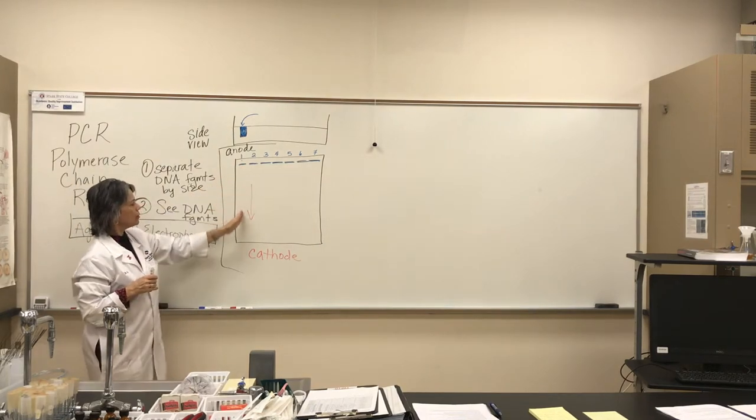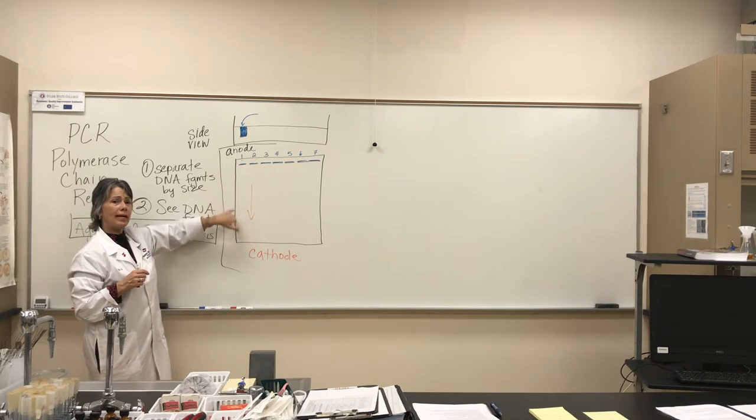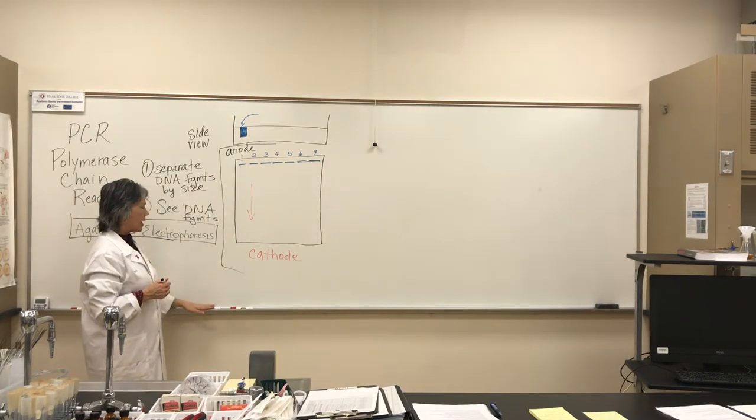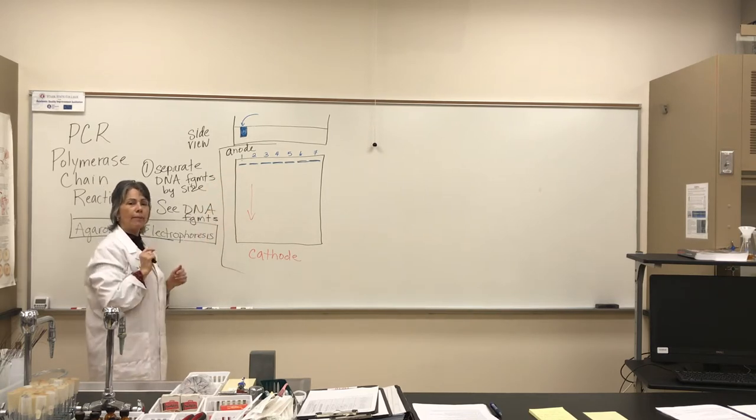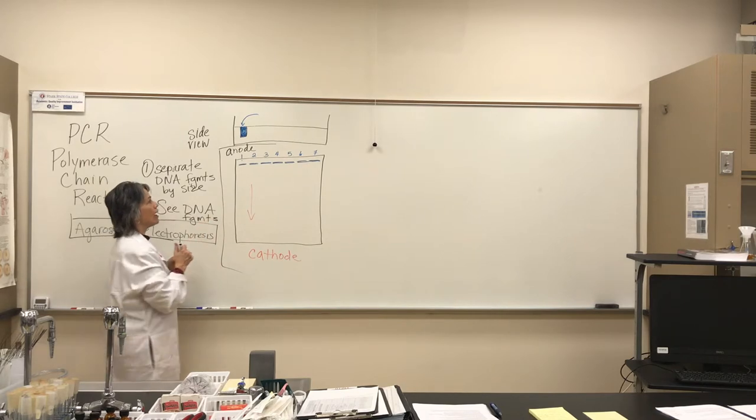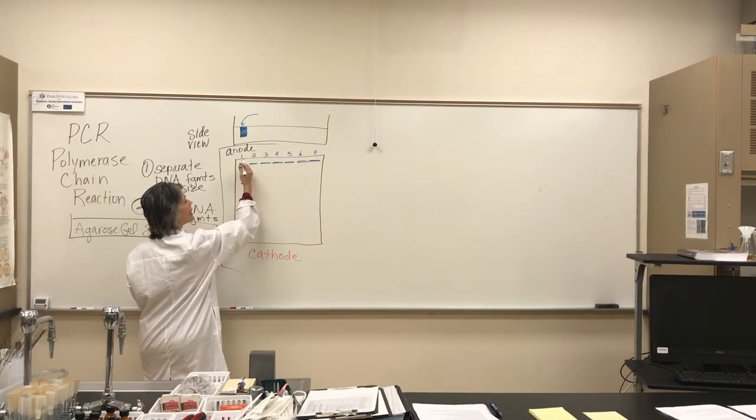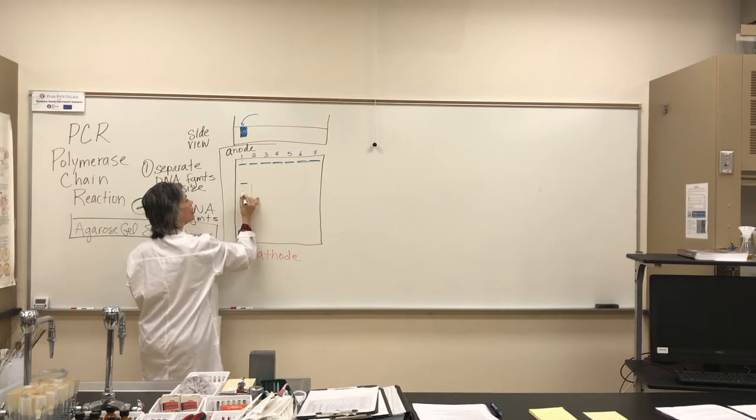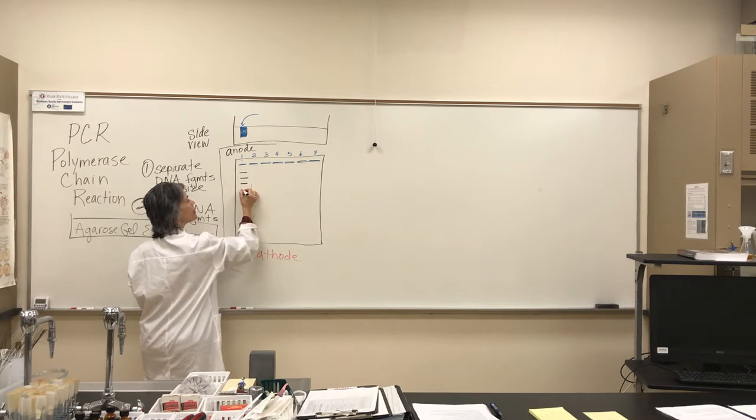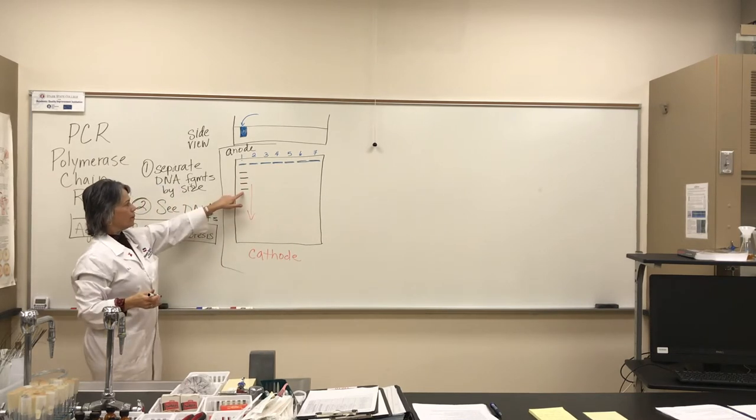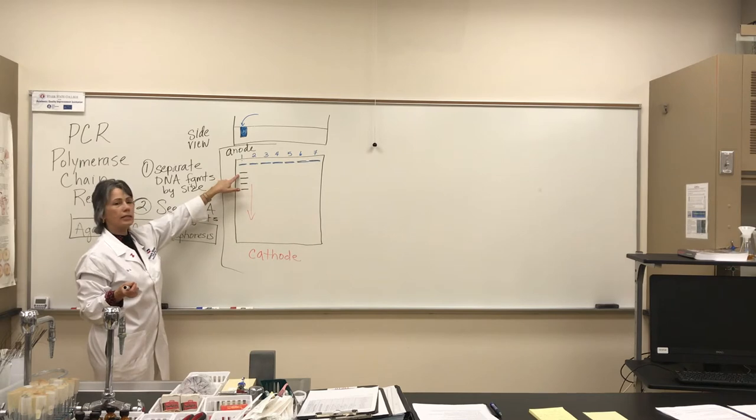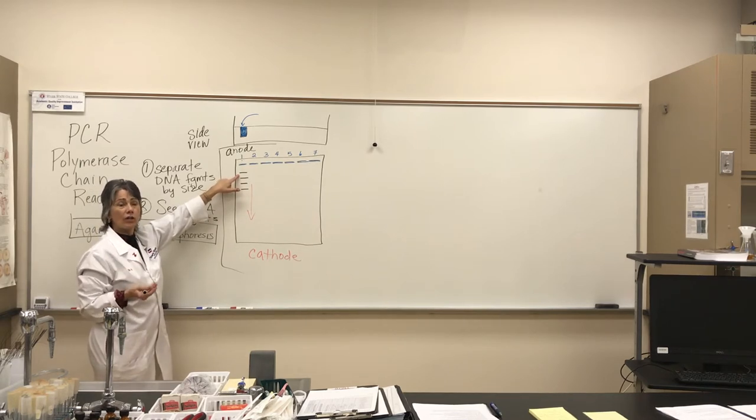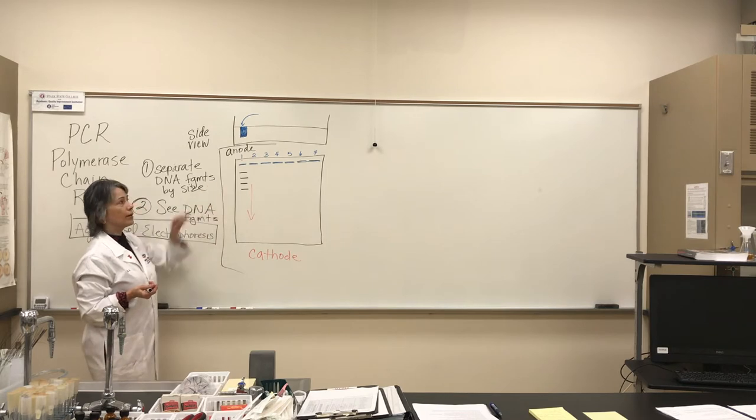So two things. Separate the DNA fragments by size. And allow us to visualize our DNA fragments. As the DNA is moving towards the cathode, it's got to wiggle through the matrix that is the agarose gel. And the smaller fragments are going to move faster. They're going to wiggle through that matrix faster. So smaller fragments, they're going to look like bands. The bands that migrate the furthest are the smaller DNA fragments. The bands that migrate the least far are the largest DNA fragments.